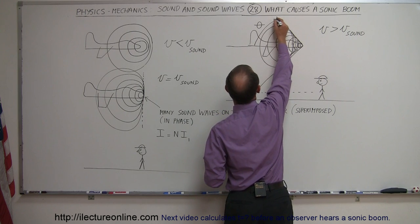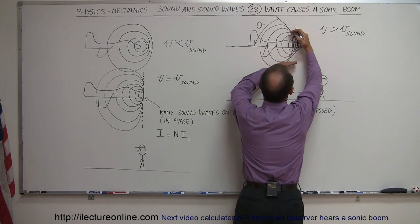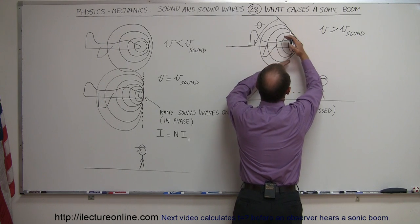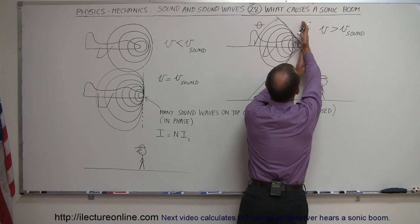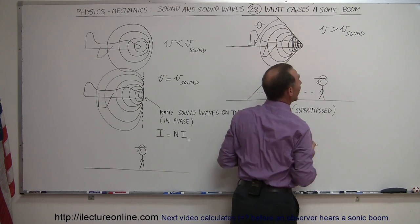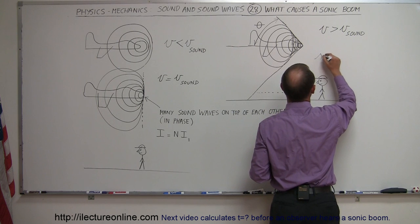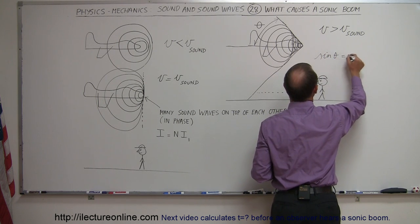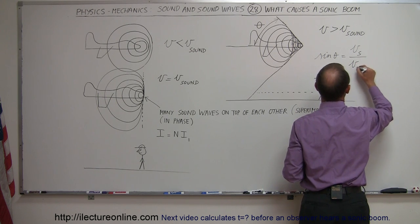It turns out we can find what the shape of this cone is, if you assume this to be the angle theta, and notice the faster the plane flies, the narrower this cone is going to be, the slower the plane flies, the wider the cone is going to be. If it flies at the speed of sound, of course we now have a 90 degree angle, and the equation that describes that shape of that cone is the sine of theta equals the ratio of the velocity of sound divided by the velocity of the plane.